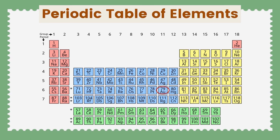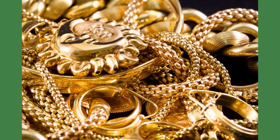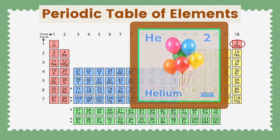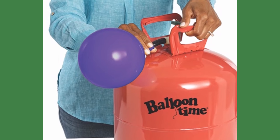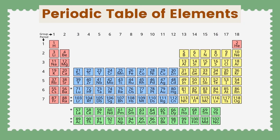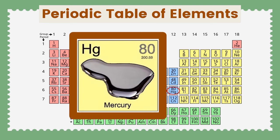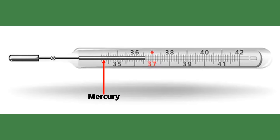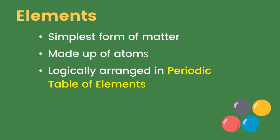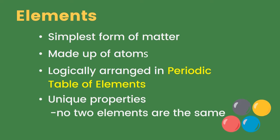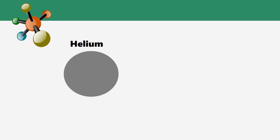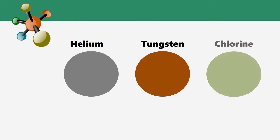Some examples are gold, commonly used as jewelry; helium, which is the gas inside balloons; and mercury, which can be found inside the thermometer. Elements have unique properties — no two elements are the same. In these samples of helium, tungsten, and chlorine,